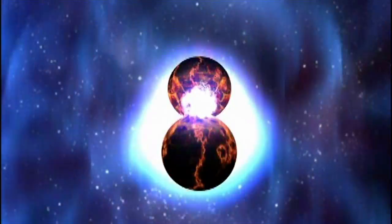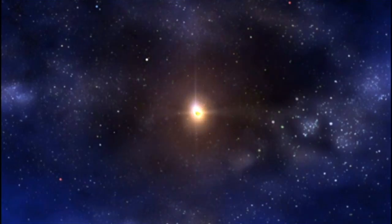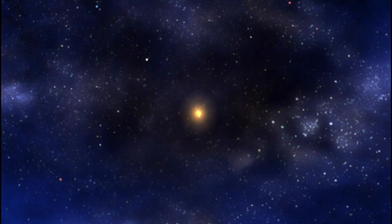When two orbiting neutron stars collide, they merge and form a black hole, releasing enormous amounts of energy in the process.